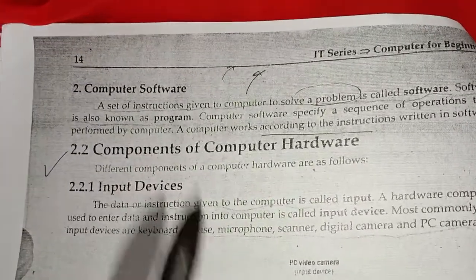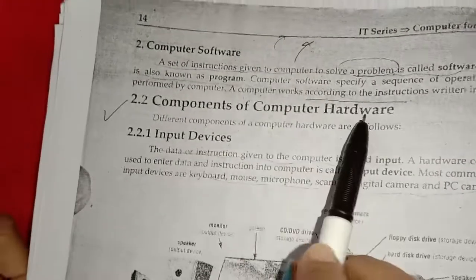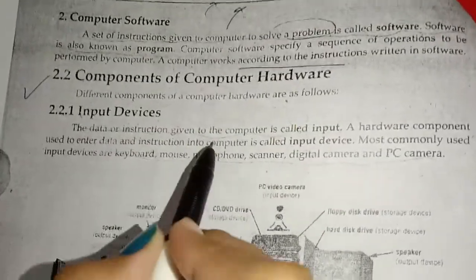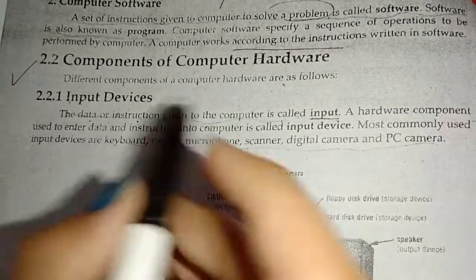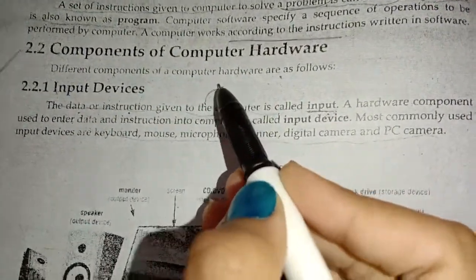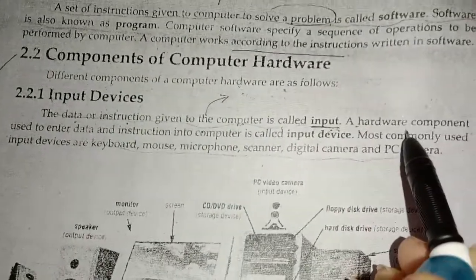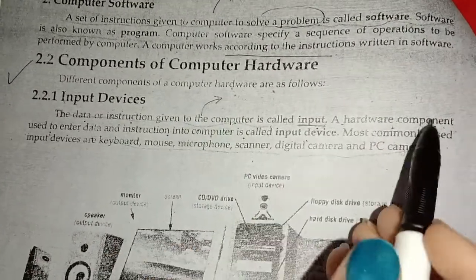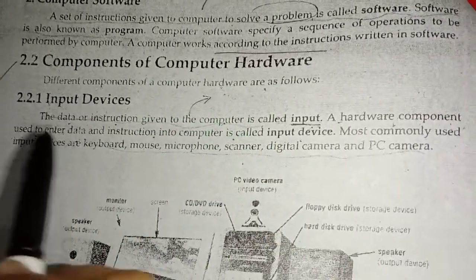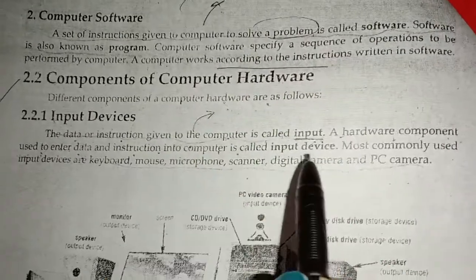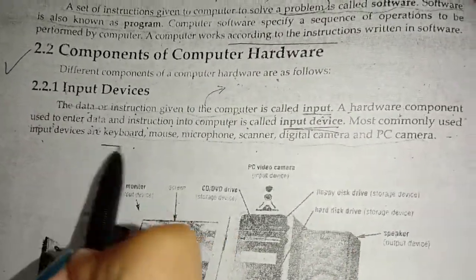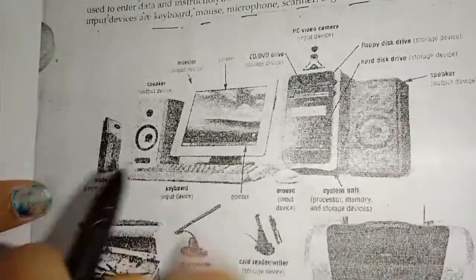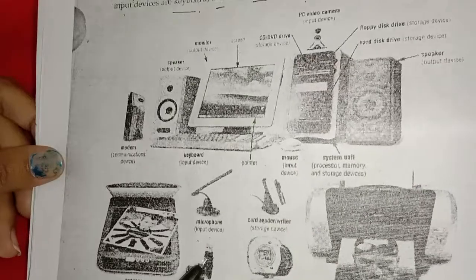What is an input device? The data or instructions given to the computer is called input. The hardware component used to enter data and instructions into the computer is called an input device. Examples of input devices that are mostly used include keyboard, mouse, microphone, scanner, digital camera, and PC camera.